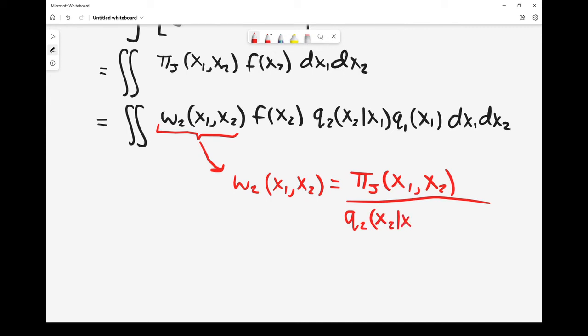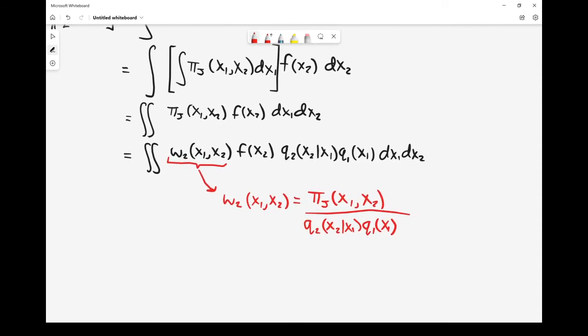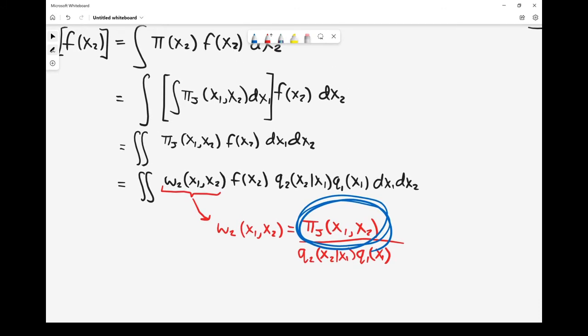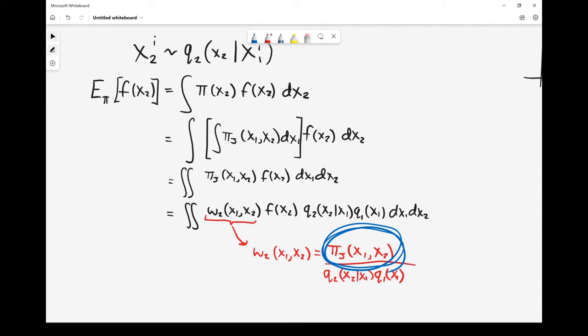Now the question at this point is probably, what is this? What is this joint thing? This bit, I find anyway, certainly the first time I looked at SMC samplers, it's quite hard, really, quite difficult to understand. That joint distribution, actually, we can pick it. It can be anything we like, just so long as it marginalizes to be the target, which is what we've written here.